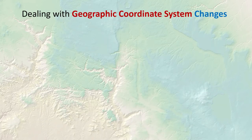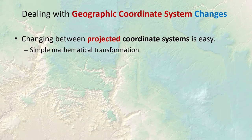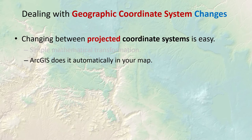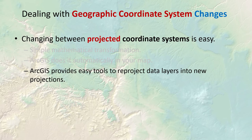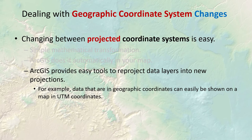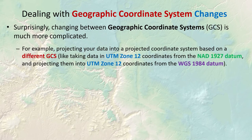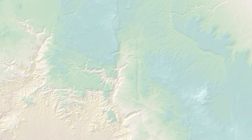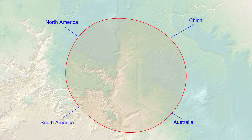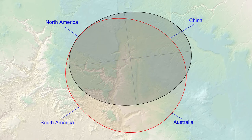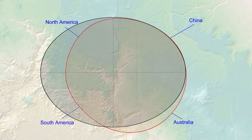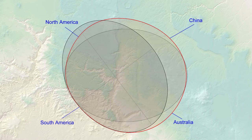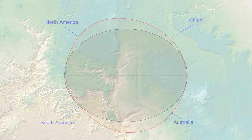ArcGIS does a great job switching between projected coordinate systems — it's a simple mathematical transformation done automatically. ArcGIS also provides easy tools to reproject data layers into new projections. However, switching between different geographic coordinate systems is much more complicated. When we transform from one geographic coordinate system to another, we're moving from one datum to another — changing spheroids and the underlying model of Earth's shape.